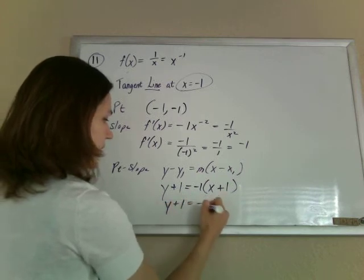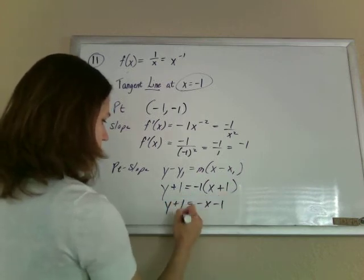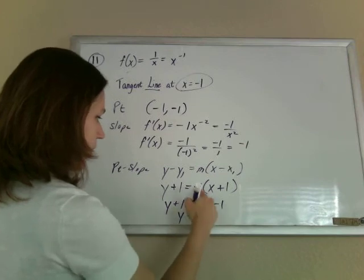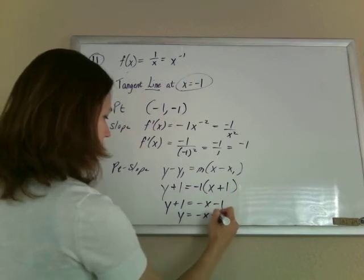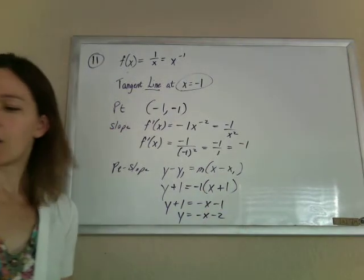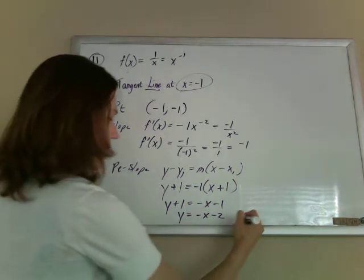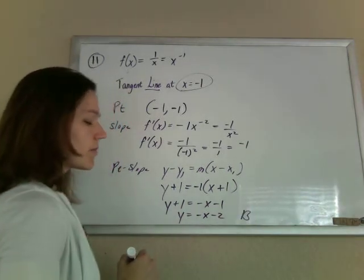If we solve it to get into the y-intercept form, we have distribute and subtract negative x minus 2, and we see that there as choice B. And that's that.